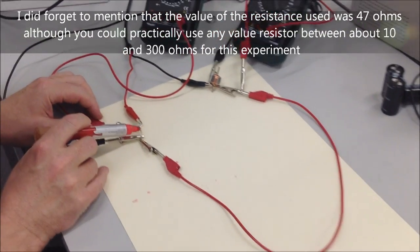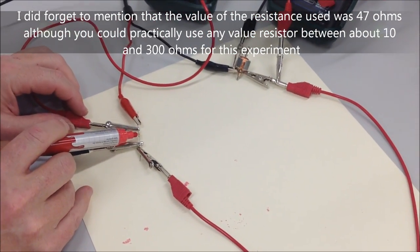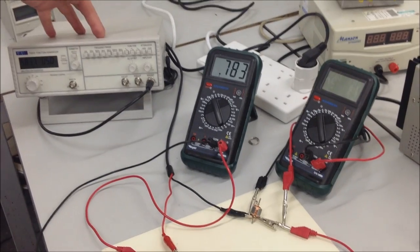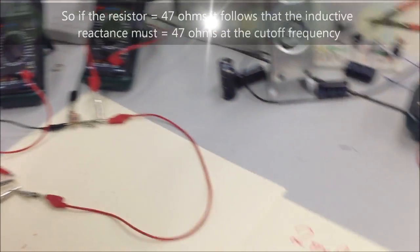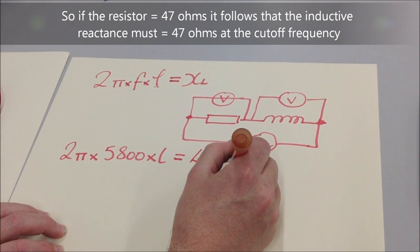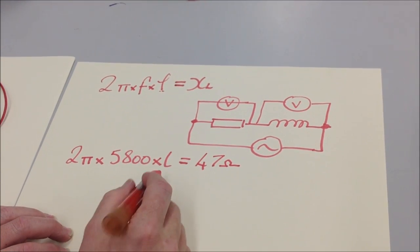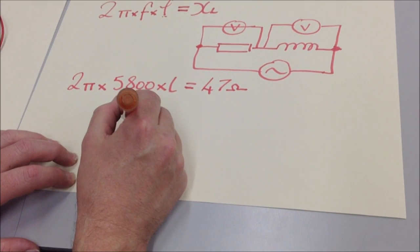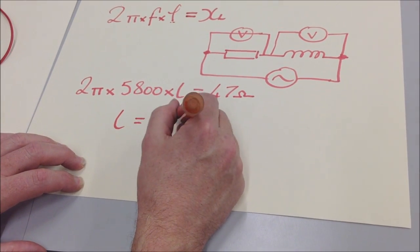Now the bit I didn't tell you about was the resistor in this part. The resistor is 47 ohms. It matches up with the output impedance of the function generator. So 47 ohms. XL therefore equals 47 ohms because they have the same resistance at this frequency.